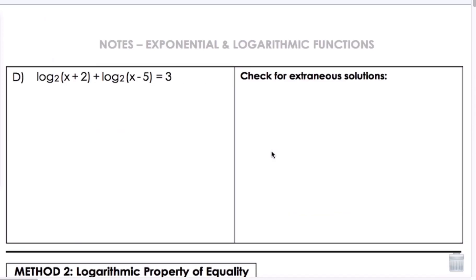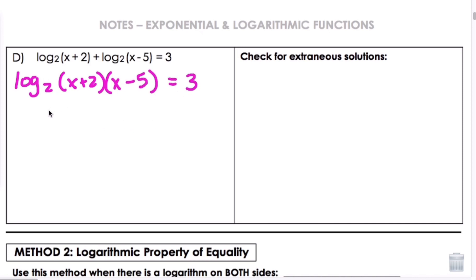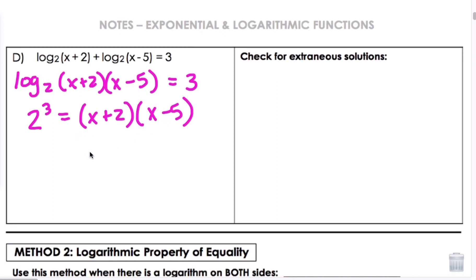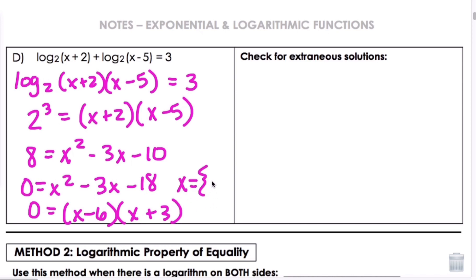Letter D — still method one. We notice there are 2 logs on this side, and we can only have 1 to write it into exponential form. Using properties of logs, addition means we multiply, so we get log base 2 of (x+2)(x−5) equals 3. Converting: 2 cubed equals (x+2)(x−5). Foiling and moving everything to one side gives us 0 equals x squared minus 3x minus 18, which factors to (x−6)(x+3), so x equals 6 and negative 3.